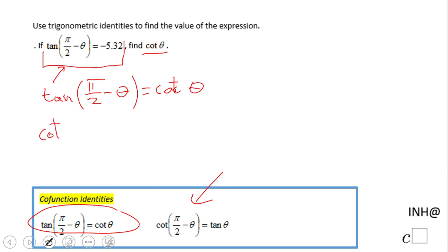I'm going to say cotangent of theta, which you notice is the guy here, equals tangent of pi over 2 minus theta. And how much is tangent right here? Negative 5.32.